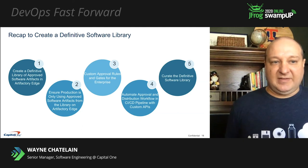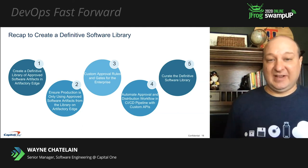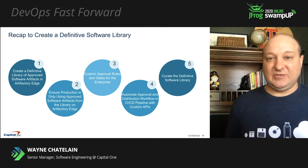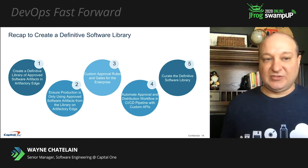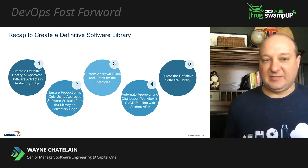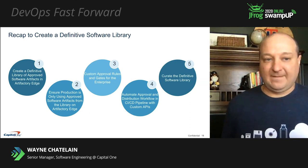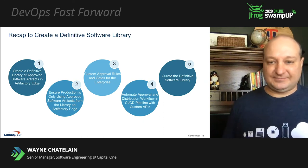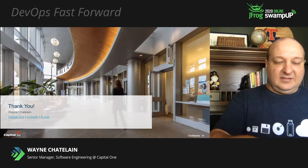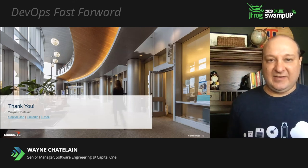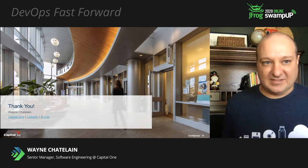So to recap what we reviewed today: we want to create a definitive software library for our organization to contain our list of approved artifacts. We also talked about how we can set up production releases to only use those artifacts that have been approved. We looked at an implementation for creating a set of custom rules to certify artifacts. Then we talked about how we can automate the entire process in the build and release pipeline to ensure we have a definitive software library. And finally, we looked at some options on expiring those artifacts to help curate our definitive software library and keep it up to date. I want to thank everyone for attending my session today and give a big thanks and shout out to JFrog for giving us this opportunity to present at SwampUp virtually this year.